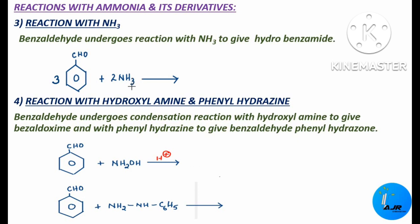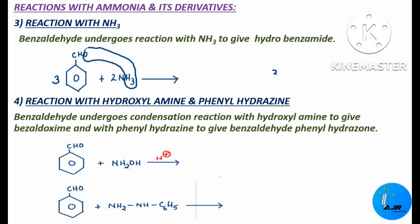There are 3 hydrogen atoms in each ammonia, so 2 × 3 = 6 hydrogen atoms. These 6 hydrogen atoms combine with 3 oxygen atoms to form water molecules. So 3 water molecules, that is 3 H2O, are released.